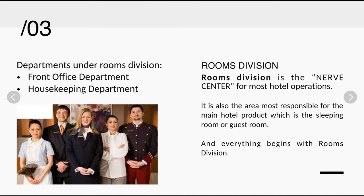The moment a guest enters the hotel, they already form a first impression — they can already give feedback, depending on the service shown by the people they encounter. The different hotel functional departments include Rooms Division, Food and Beverage, Accounting, Human Resources, Engineering, Sales, Marketing, and even Catering. All of those departments depend on each other in order to provide the best service and generate revenue.